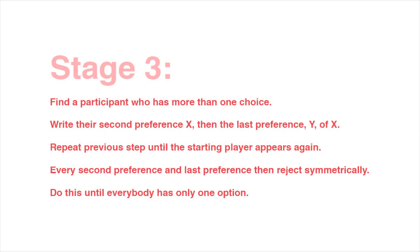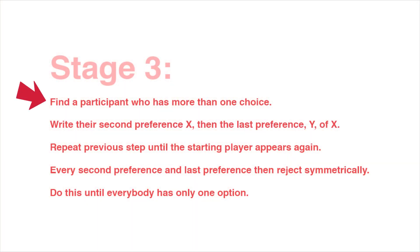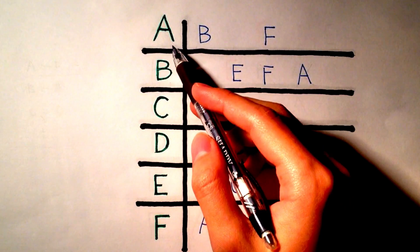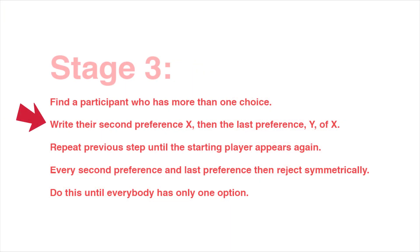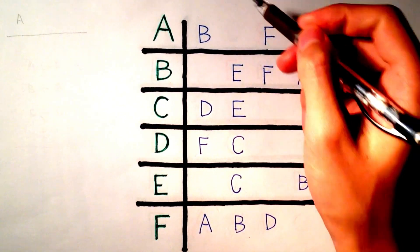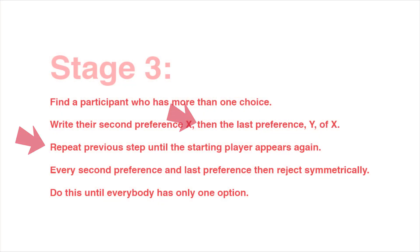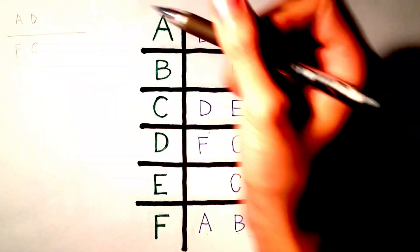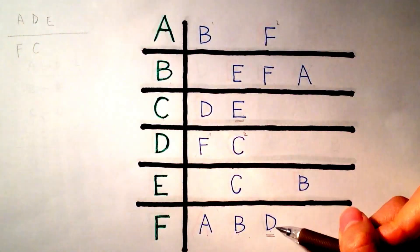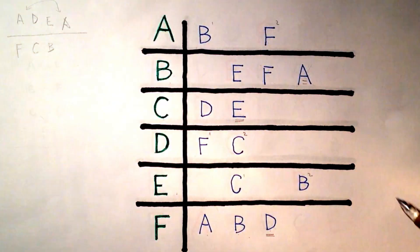In the final stage, we need to eliminate preference cycles. Here is the table after removing the crossed letters. To find a preference cycle, we start by looking for a participant who has more than one choice. A is the first one with more than one choice, so we write down A and draw a line below it. For everything above the line, we look for the second best choice and put it directly below — A's second choice is F. For everything below the line, we look for their least preferable partner and put them diagonally over the line — F's least preferred is D, so we write D beside A. D's second best choice is C, C's last choice is E, E's second choice is B, and B's last choice is A. Now A has been repeated, meaning we have a preference cycle. We cancel out symmetrically the diagonal pairs.